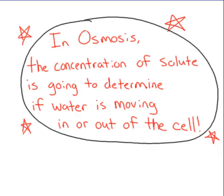This water movement we call osmosis. This is a big key idea. In osmosis, when we're talking about cells, the concentration of solute — the sugar, the salts — is going to determine where the water is moving. The solute cannot move across the cell membrane, but water can through the protein channels via diffusion. So the amount of solute is going to dictate how much water moves into or out of the cell.